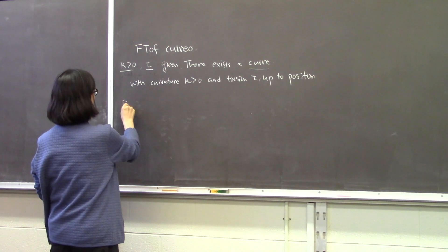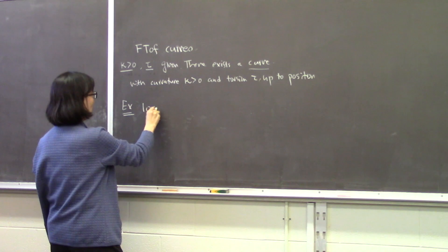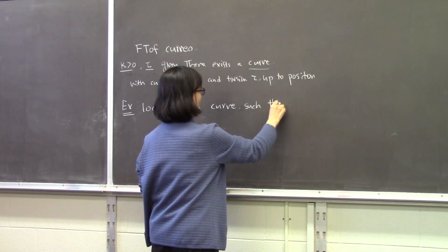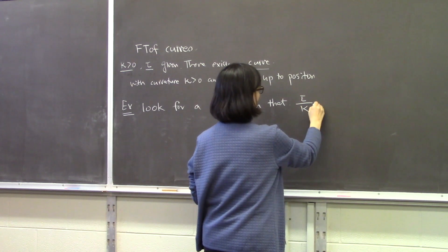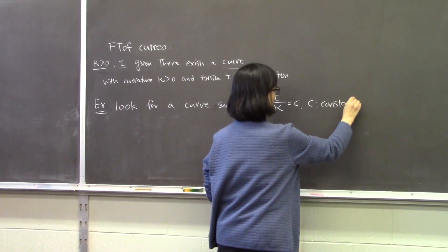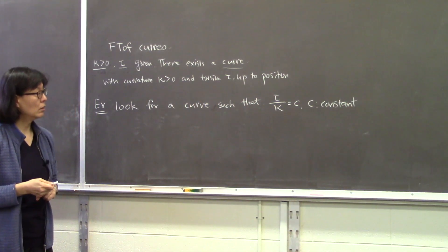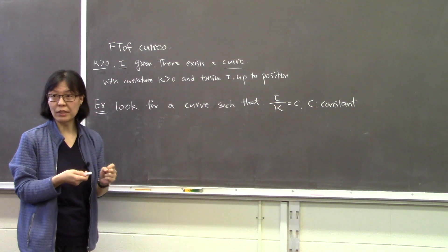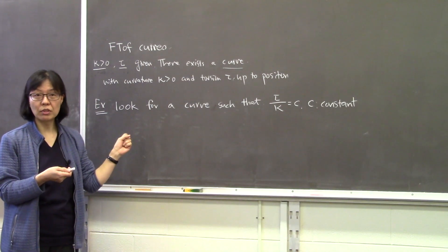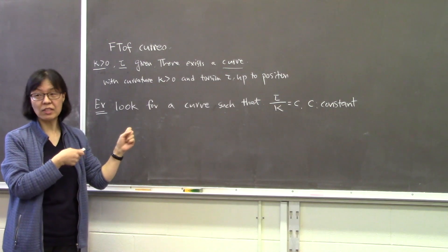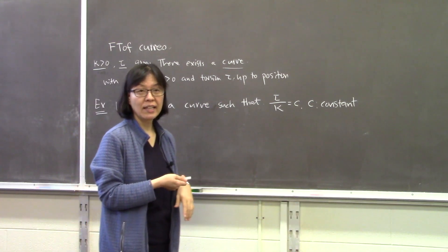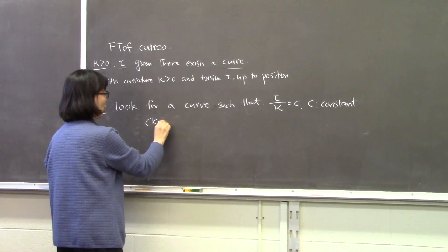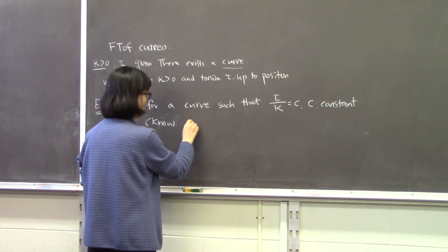We work this example: we look for a curve such that the ratio of torsion and curvature is a constant. We already had a proposition for that. What kind of curve has that property? A helix. We know that by the proposition we did, so the curve is a helix.